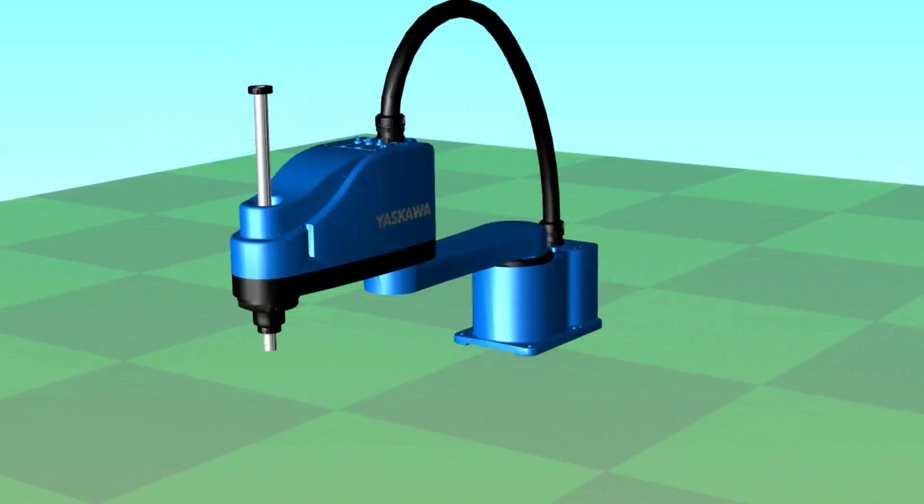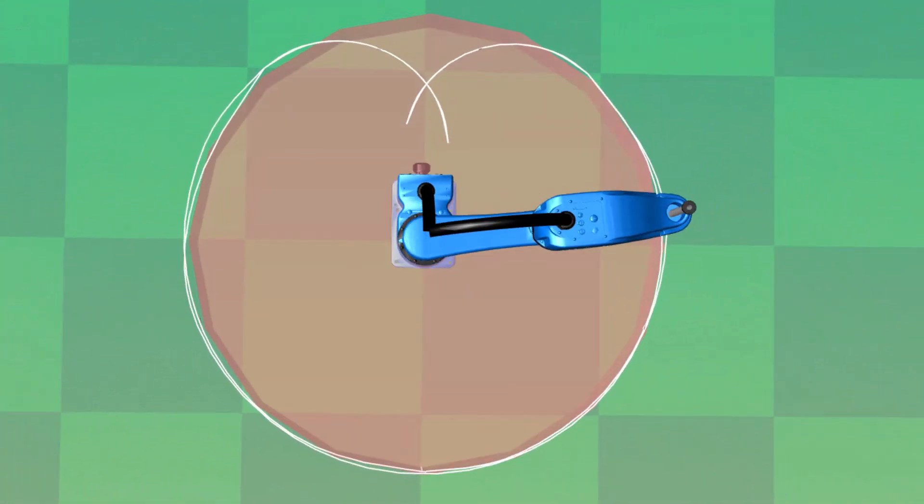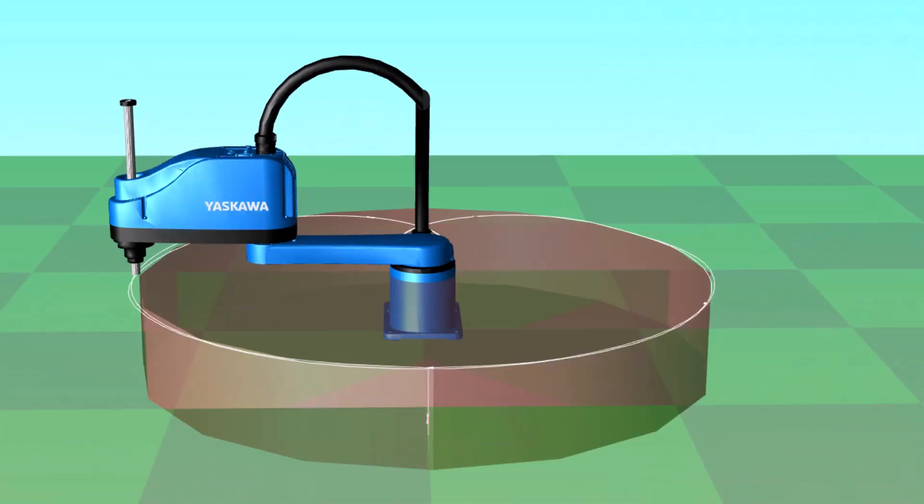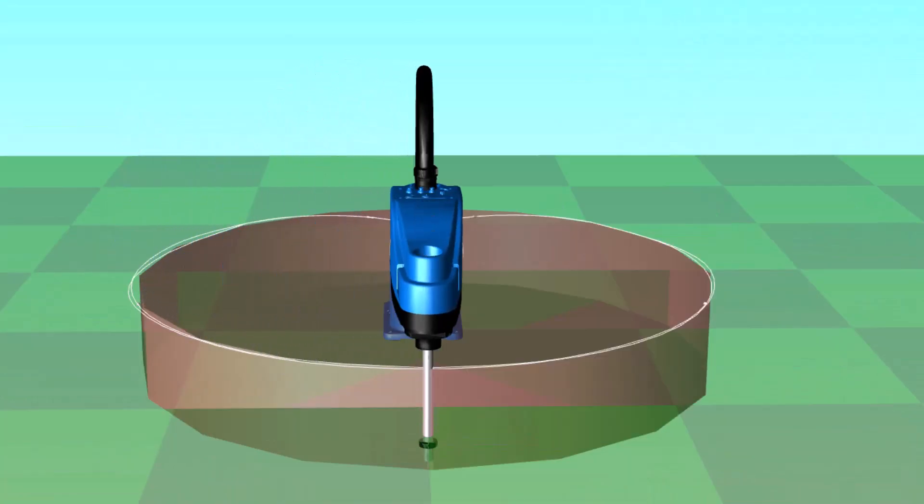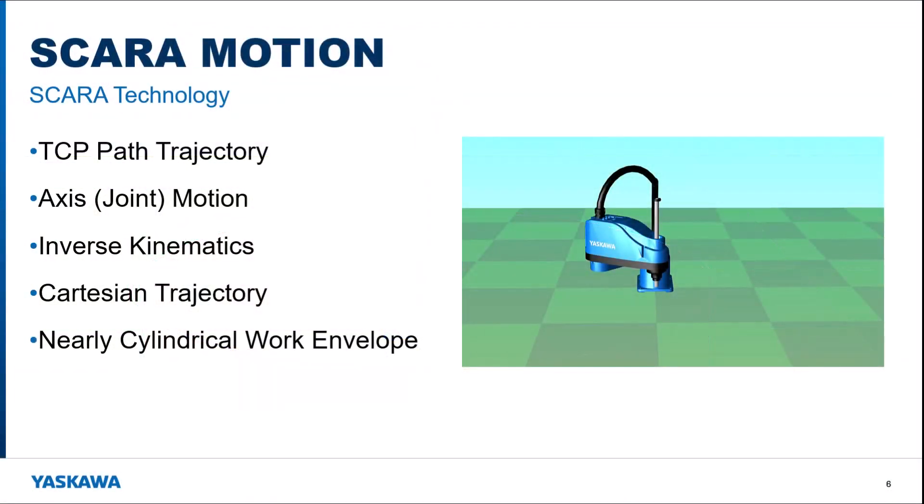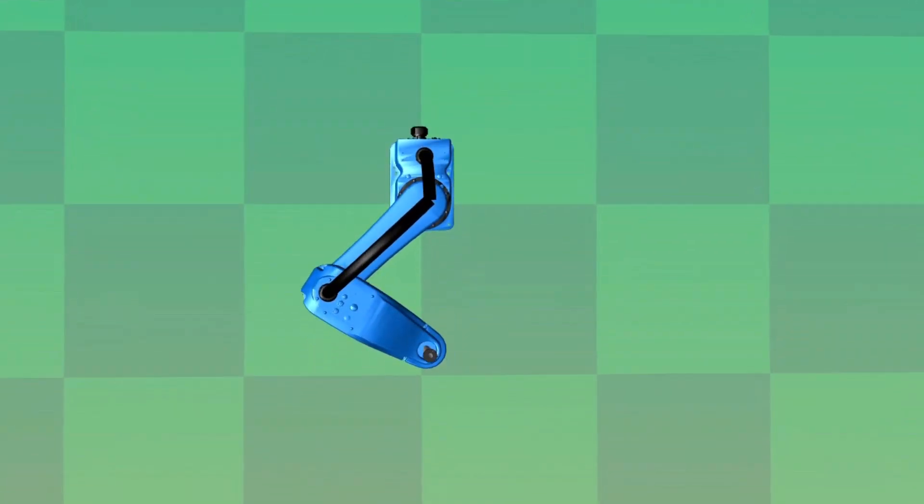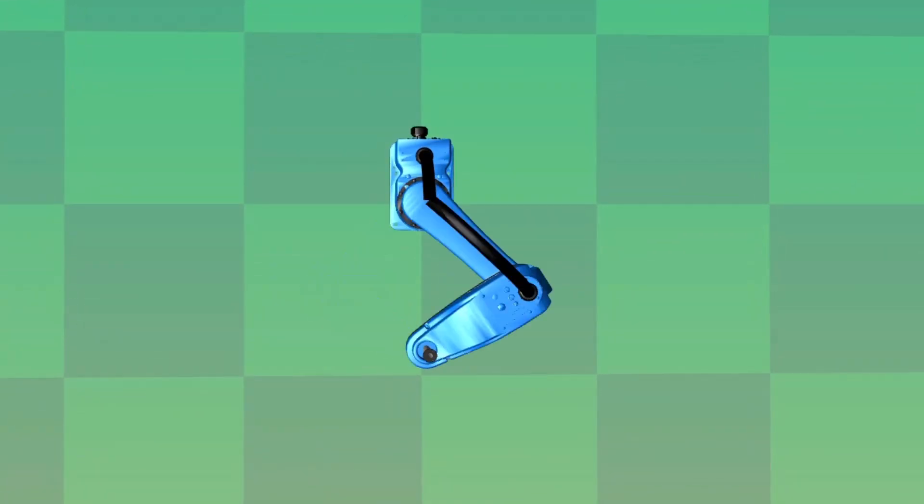The work envelope for the robot is nearly cylindrical, with the exception of the area directly behind the robot, and the depth is limited by the vertical axis. It is interesting to note that in much of this work envelope, the TCP position can be achieved with exactly two different poses, depending on the orientation of the second joint.